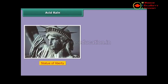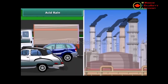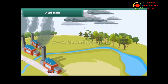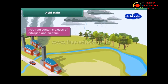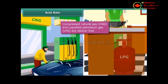These are images of the Statue of Liberty in New York and the Taj Mahal in Agra — they are badly damaged due to acid rain. Industries and vehicles release toxic gases like sulfur dioxide and nitric oxide into the atmosphere. These gases react with water vapor in the atmosphere to form sulfuric acid and nitric acid, which fall as acid rain. Use of clean fuels like compressed natural gas (CNG) and liquefied petroleum gas (LPG) can reduce the acidity of rain.